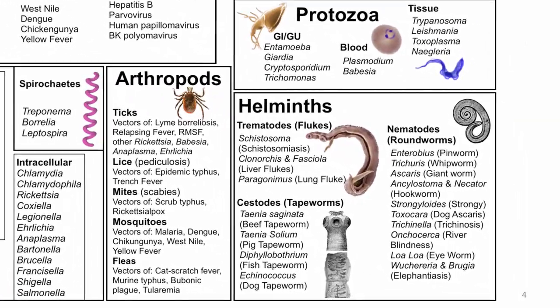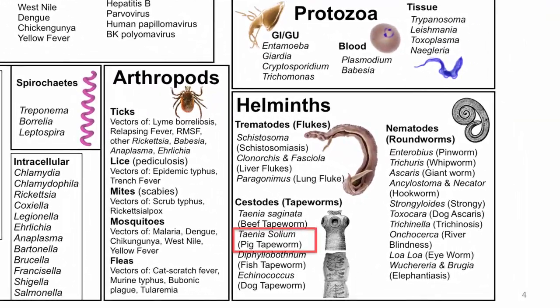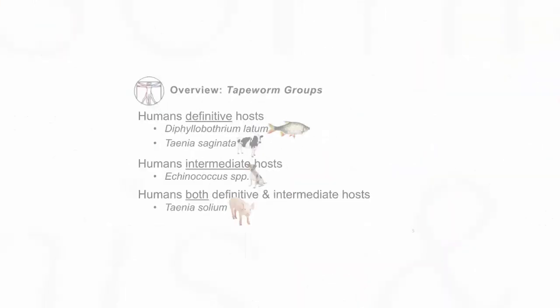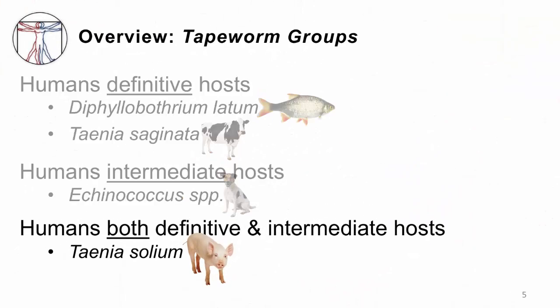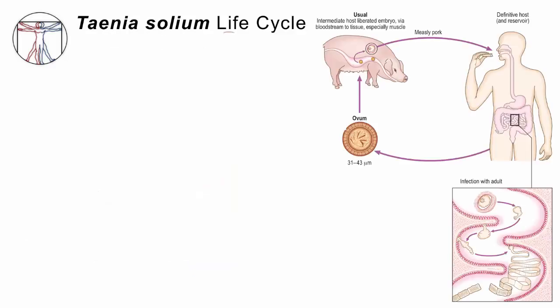This is our tree of pathogens. We're in the helminth section, in particular the cestodes, or tapeworms. As you recall, the tapeworms come in different flavors. This is the pig tapeworm — it's the only one where humans can be both definitive and intermediate hosts.